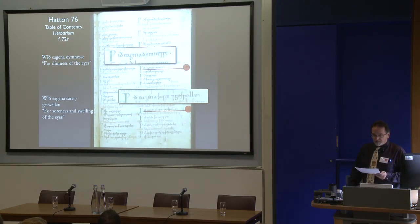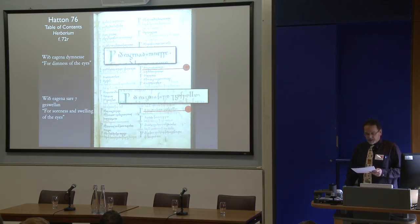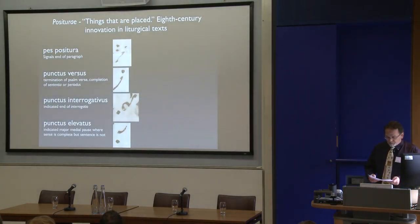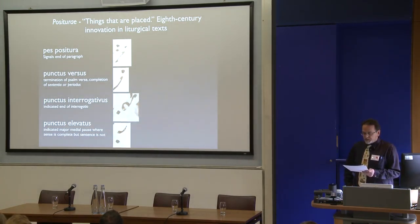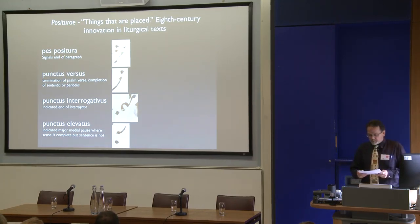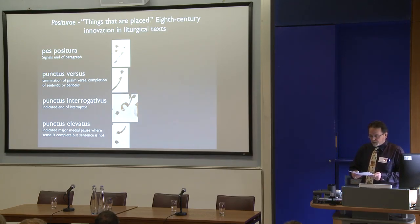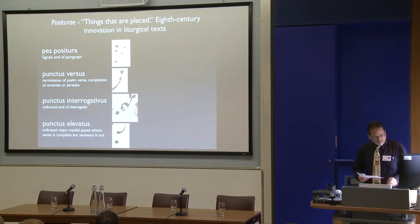But there's one type of intervention applied pretty consistently to all the manuscripts Tremulous marked up that's only been mentioned in passing by others: his selective repunctuation of the text he encountered in these manuscripts. Briefly, Tremulous added or altered the punctuation of the original Old English scribes using a system of positurae, inserting the simple punctus, the punctus versus, and the punctus elevatus where they do not appear in the original. Moreover, he frequently converts existing punctuation — in most cases transforming the simple point to a punctus elevatus. I'll give you a few examples very quickly.